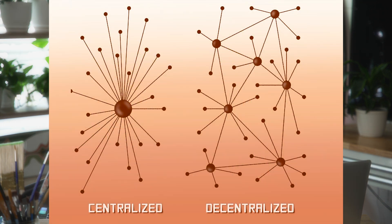Going back to that decentralized aspect, there is no one single master copy of the blockchain. Every computer that contributes to the network has their own copy of the blockchain, and they're constantly checking with all the other nodes to make sure everyone has the same record. Computers that contribute to the network are known as nodes. Because each individual contributor has their own copy of the blockchain, there cannot be a single point of failure, which leads to an impressive layer of security.